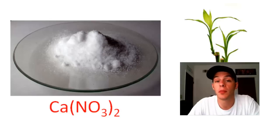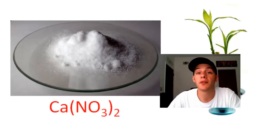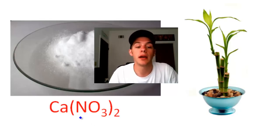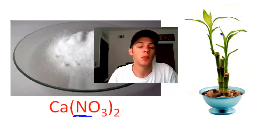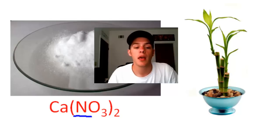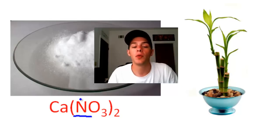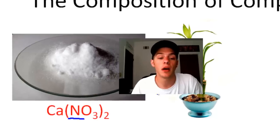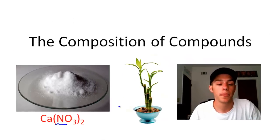One of the most important uses of calcium nitrate is as a component of plant fertilizers. The main element of interest to a plant in calcium nitrate is nitrogen. Nitrogen is a very important plant nutrient — it promotes the growth of leaves and vegetation. So suppose we wanted to calculate how much nitrogen is in a given sample of calcium nitrate.